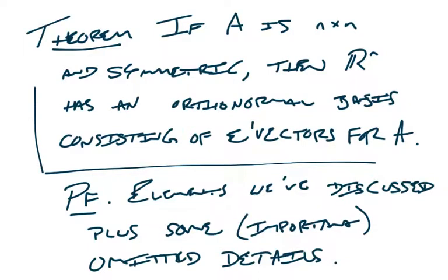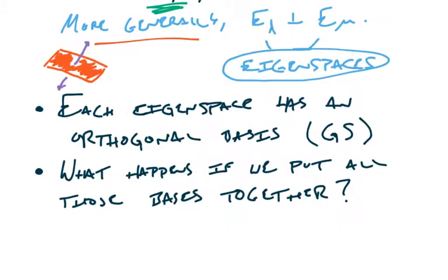We have this theorem: if A is an n-by-n symmetric matrix, then R^n has an orthonormal basis consisting of eigenvectors for A. All these eigenvectors can be thrown together into a big collection, and that collection always forms a basis for R^n. The orthogonal part is the hard part — if you have distinct eigenspaces, you get orthogonality for free. That's what the lemma told us.